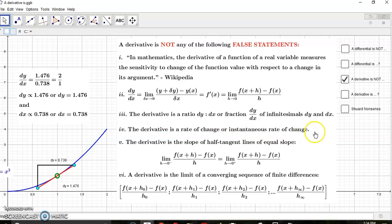The derivative is a rate of change or instantaneous rate of change, which is false because it has nothing to do with change. The derivative is slope of the half tangent lines of equal slope.